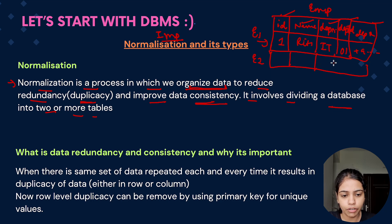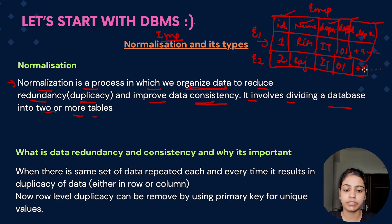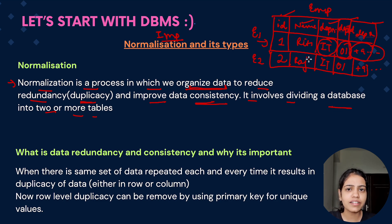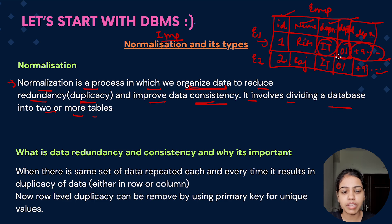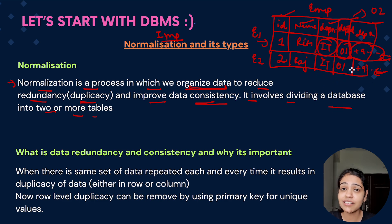You go ahead and insert the detail of the second employee. Employee id would be 2, the name would be Raj, the department name is IT, the department id is again 01, and the department phone number is the same as above. Now can you see that department name, department id and department phone number — whenever we insert any details of an employee who is in the IT department, these are getting repeated. Consider that there are a bunch of employees who are in the IT department, so we have to do this repetition each and every time.